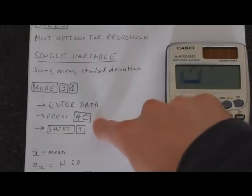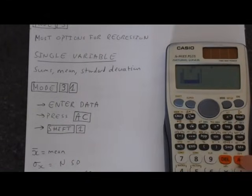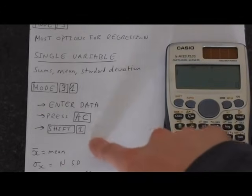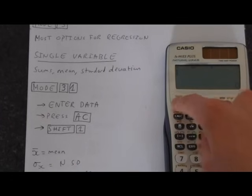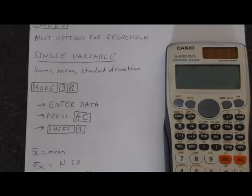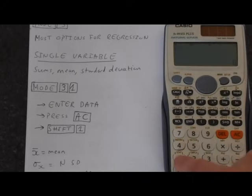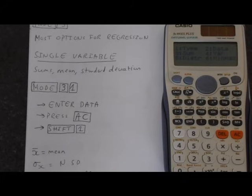To save to memory using the AC key, press AC, and then go back into statistics mode so we can access our functions to do the calculations. Press shift, and then you'll notice on the 1 key there's stat, so you press that, and we're back into the statistics menu.